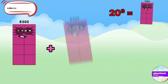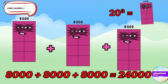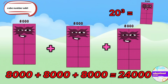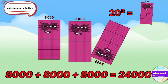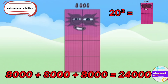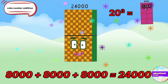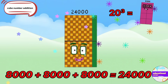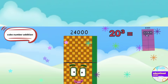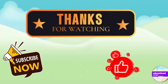The cube of 20 is 8000. If we add 8000 three times, the answer is 24000. If you like the video, please like, share, and subscribe.